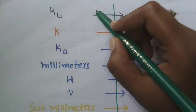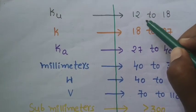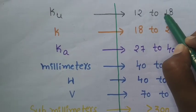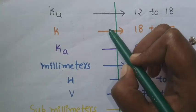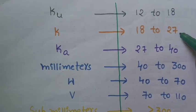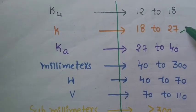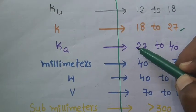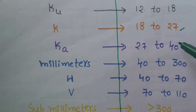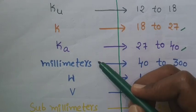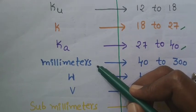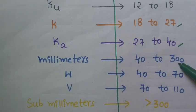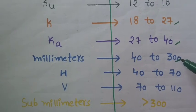For the Ku band, the frequency range is about 12 to 18 gigahertz. For the K band, the frequency range is about 18 to 27 gigahertz. For the Ka band, the frequency range is about 27 to 40 gigahertz. For millimeter waves, the frequency range is about 40 to 300 gigahertz.